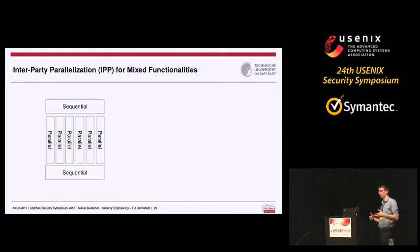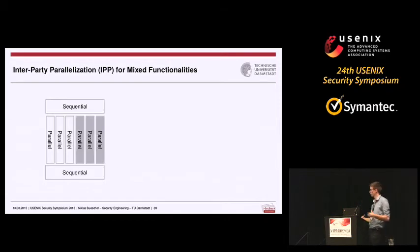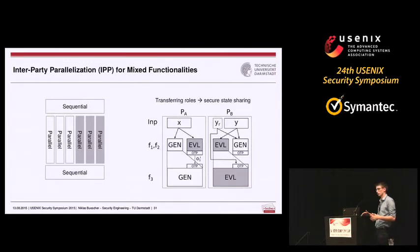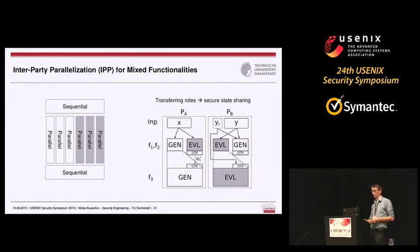With a compiler handling more complex applications that have both parallel and sequential sections, we want to exploit inter-party parallelization even within mixed-mode functionalities — sequential code before and after parallel parts, or multiple parallel and sequential sections. To do that, we propose to securely share the state between sections, either using one-time pads or permutation bits. It is possible to exploit IPP even within a much more complex circuit.